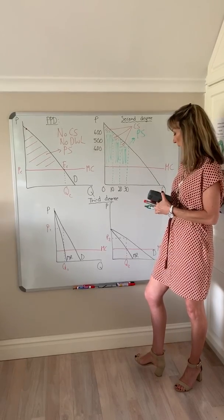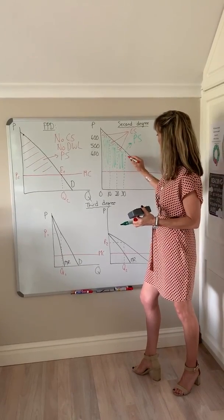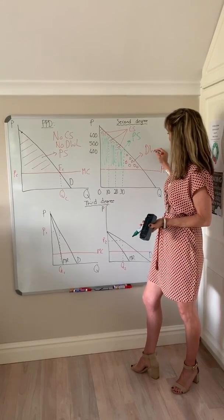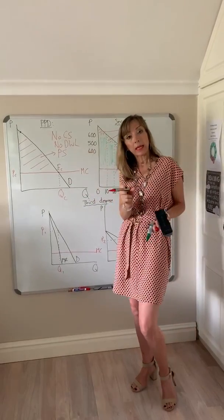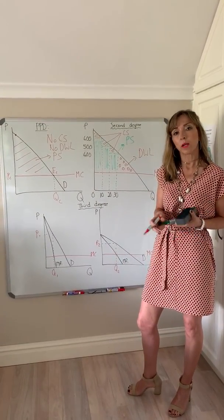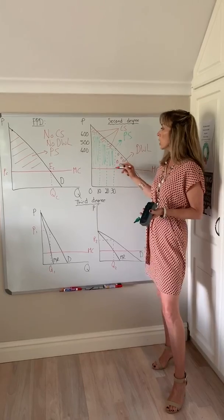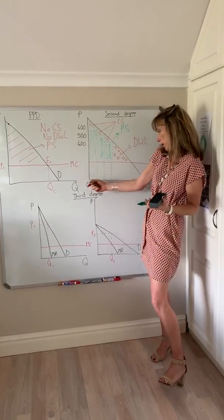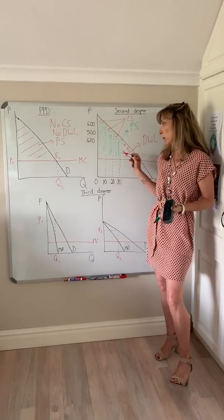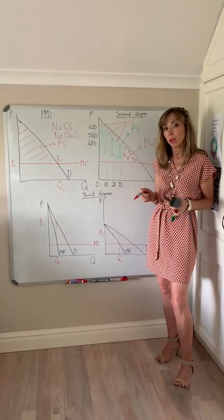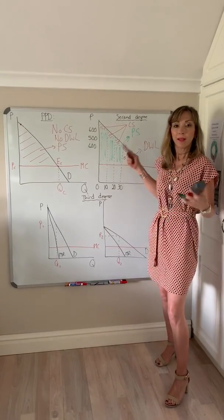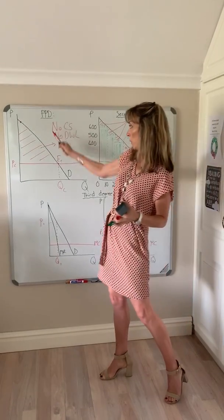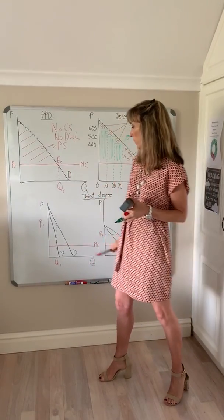There is also a deadweight loss, equal to the spotted triangle shown here. The deadweight loss is likely to be less than under a simple single-price monopolist, because you've broken the market into various groups, increased output, and reduced the deadweight loss. But there is still a deadweight loss, making it less efficient than perfect competition and even less efficient than perfect price discrimination, where there was no deadweight loss.